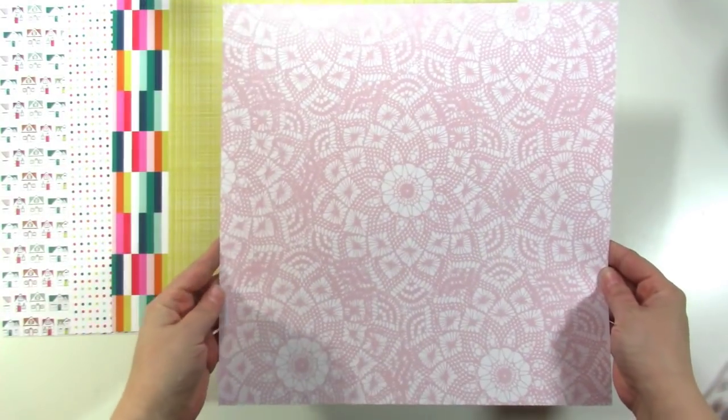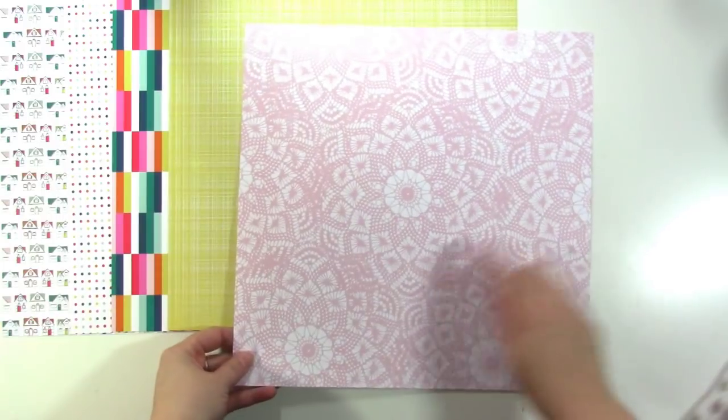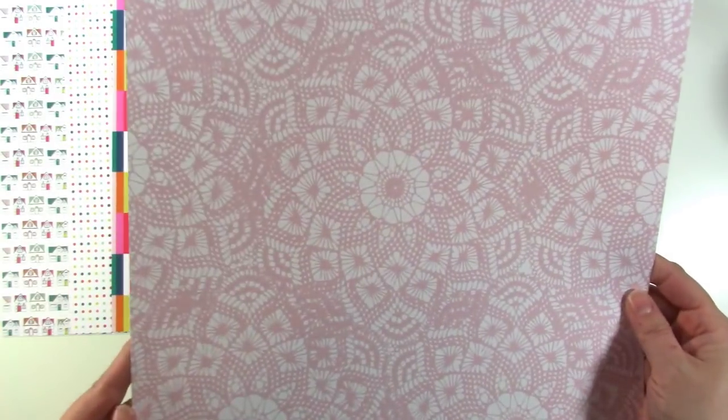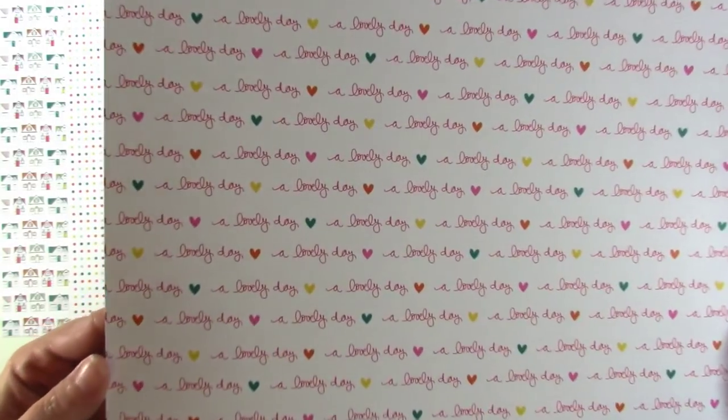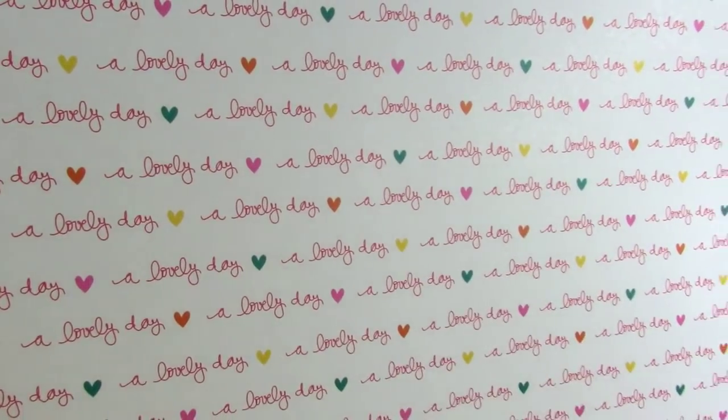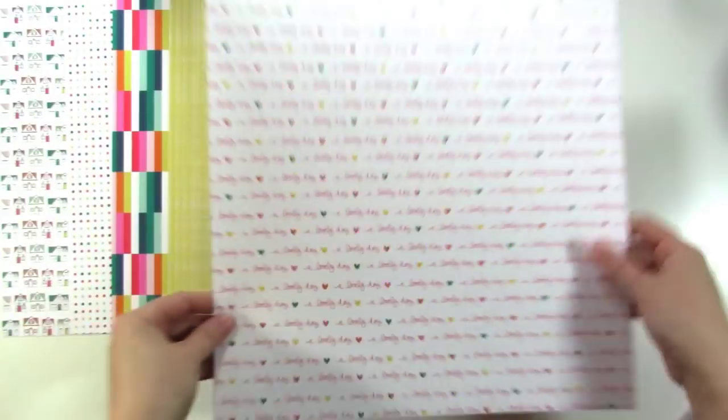The next paper is this really pretty doily lace kind of print in the light purple-y pink color that's in the kit, so it's really a pretty pattern. I love that. But the back side has this cool, it just says a lovely day with little hearts in it. And it's just adorable. Love that.